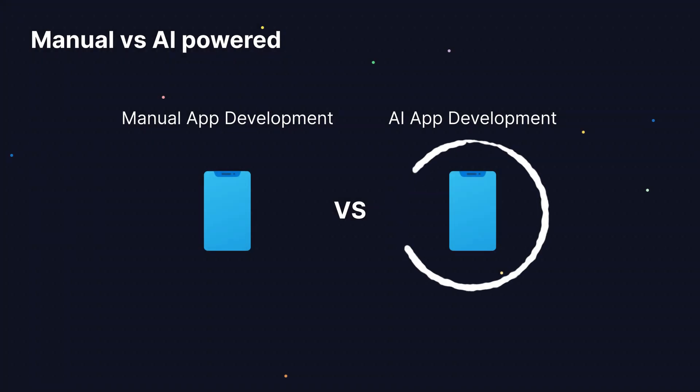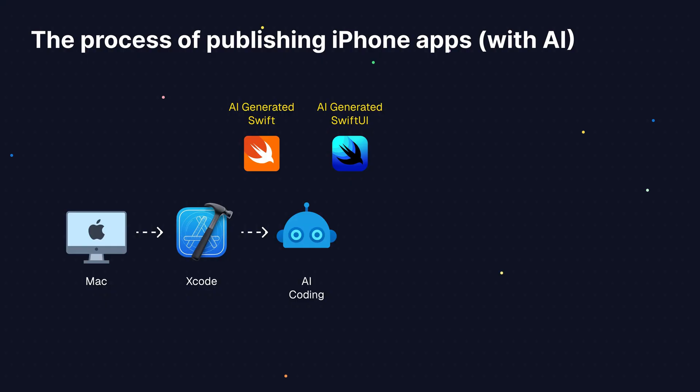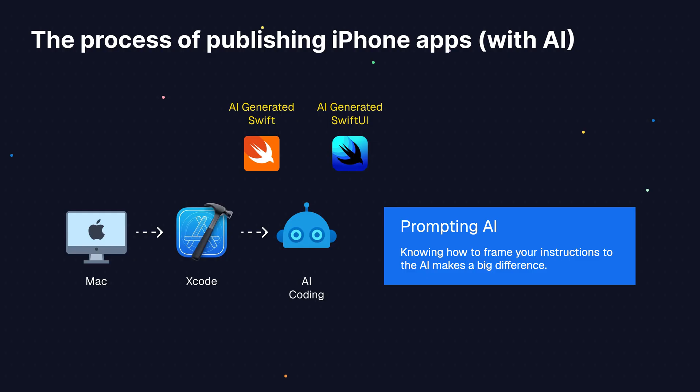Now let's consider how AI makes this different. Instead of writing the Swift and SwiftUI code manually, we use everyday language to tell AI what we want. We can tell AI how we want the screen to look, how the user should navigate through the app, and what happens when the user taps a button. AI will generate all of the Swift and SwiftUI code to produce the result we've asked for. That's why you don't need to know or understand any code — although it certainly helps if you do. The really tricky part of working with AI is describing what you want accurately, but we'll get to that later.